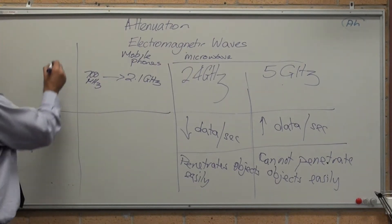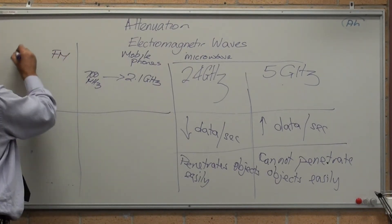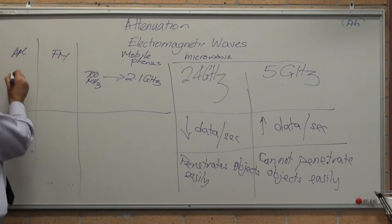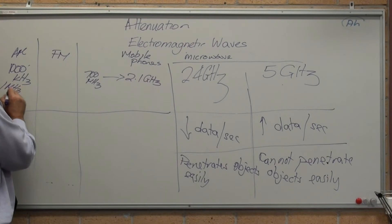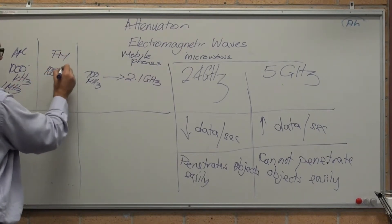The other two we talk about are FM and AM. AM is working at 1,000 KHz, 1 MHz, FM is working at 100 MHz.